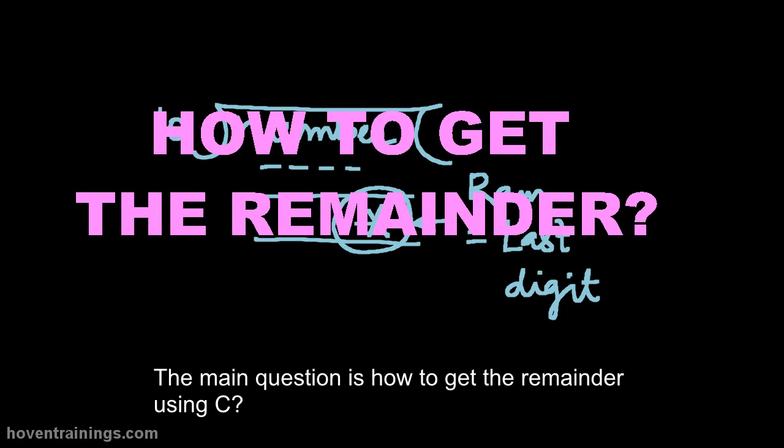The main question is how to get the remainder using C? We have a modulus operator in C. This operator has the same symbol as the percent sign. But it is a different operator. It is nowhere similar to percent.